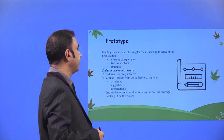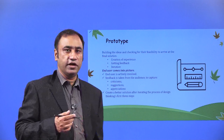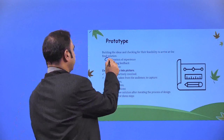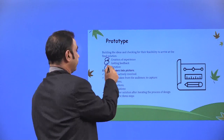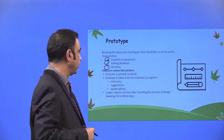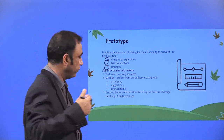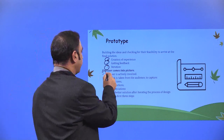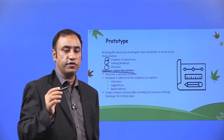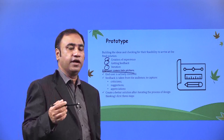Prototype: building the ideas and checking for the feasibility to arrive at the final solution. This is the step where we actually build the idea and study the feasibility of this particular process — creation of experience, getting feedback, iteration. In this particular stage you do the creation of your experience, getting feedback, and once you have got feedback, if it requires some changes, you go back and iterate the same process. End user comes into the picture, because you create the prototype keeping in mind the end user requirements collected in the previous processes of empathy, defining, and ideation.